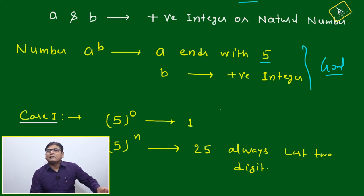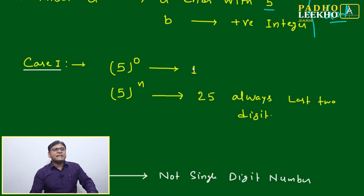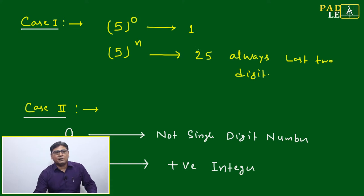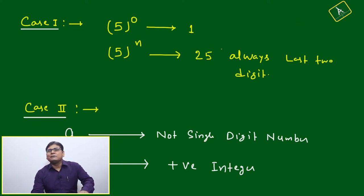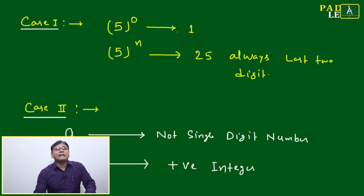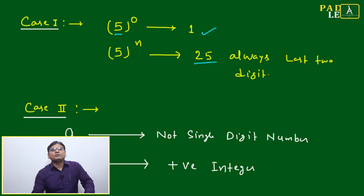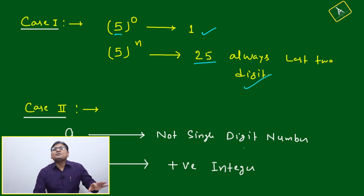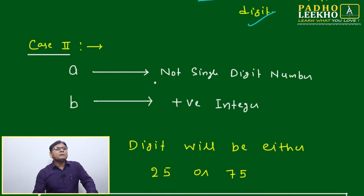We'll start with Case 1: if the number is a single digit number ending with five, then only five is possible. For five to the power n, it will always be 25. No need to worry — five to the power n will always end with 25.